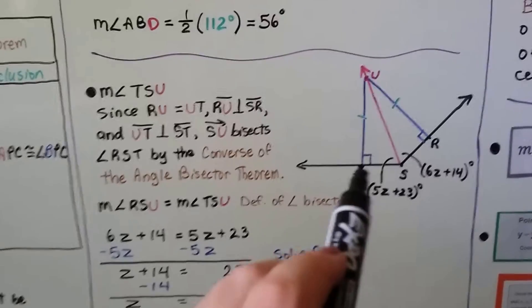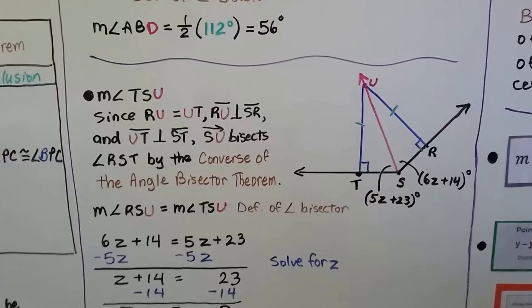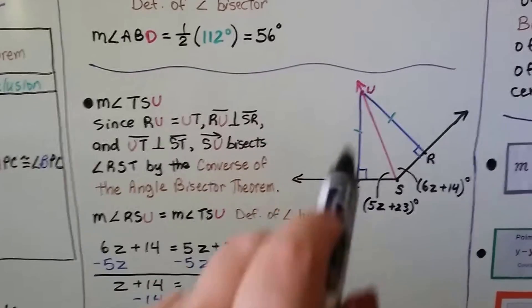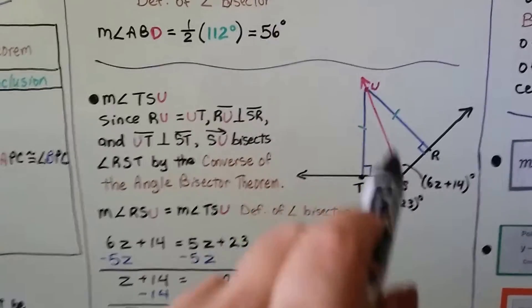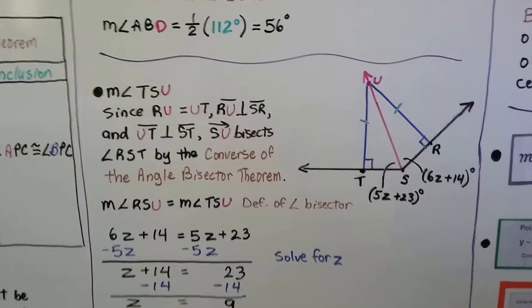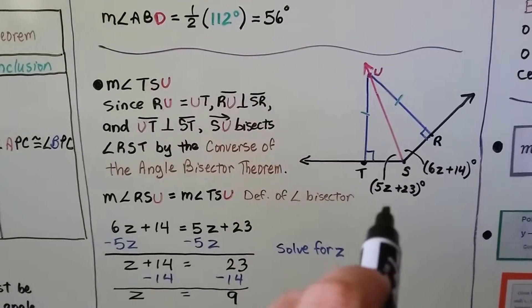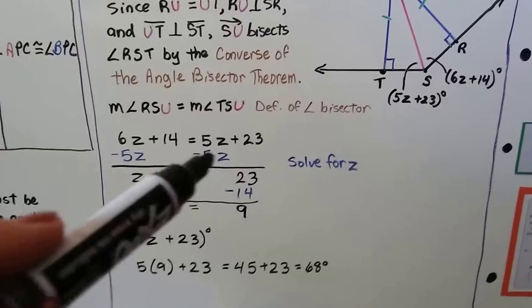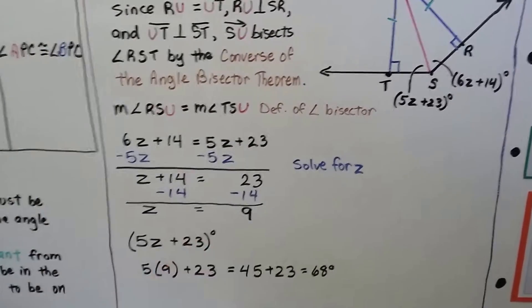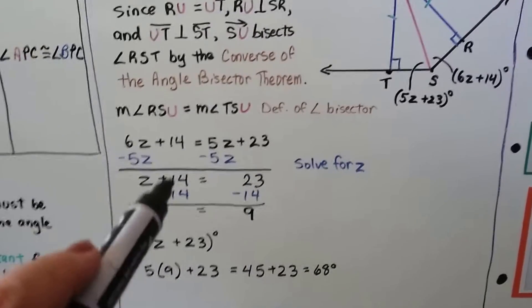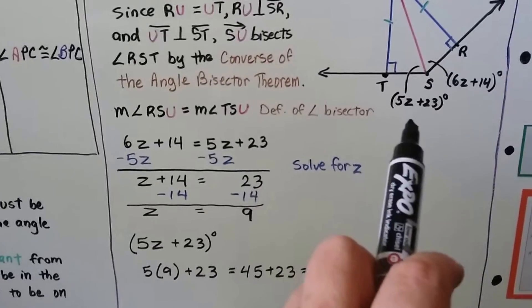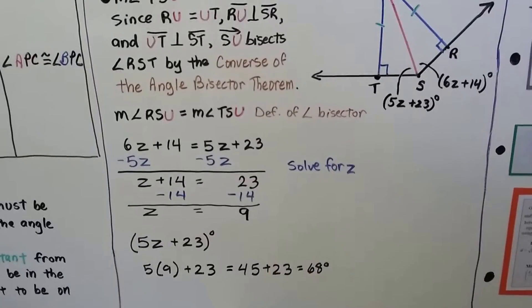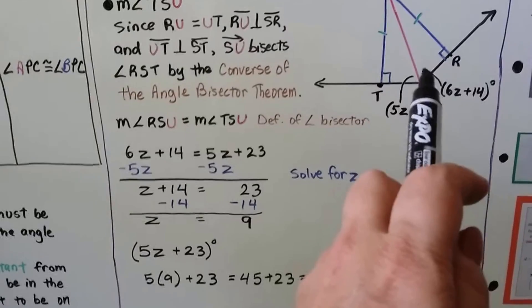To find the measure of angle TSU — that's the 5z plus 23 degrees — since RU is equal to UT, and RU is perpendicular to segment SR, and segment UT is perpendicular to segment ST, ray SU bisects angle RST by the converse of the angle bisector theorem. Setting the two expressions equal: 6z plus 14 equals 5z plus 23. Subtracting 5z from each side gives z plus 14 equals 23, so z equals 9. Substituting: 5 times 9 plus 23 equals 45 plus 23, which is 68 degrees. And since they're equal, both segments are 68 degrees.